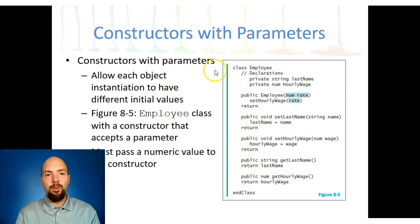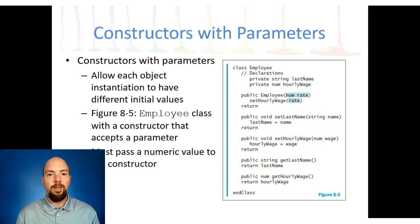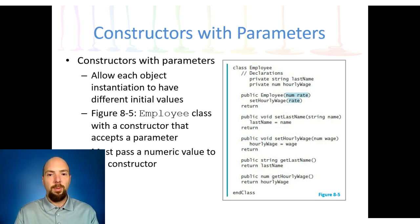We can also pass parameters into the constructor, making one that allows us to send in a different initial value. We did this in a prior lesson where we created actors with a constructor taking first name, last name, and so forth. This code simply states that if somebody creates a new actor and passes in certain values in a certain order, the system will automatically set those values. If those three values aren't passed in, it creates the object with all blank values.